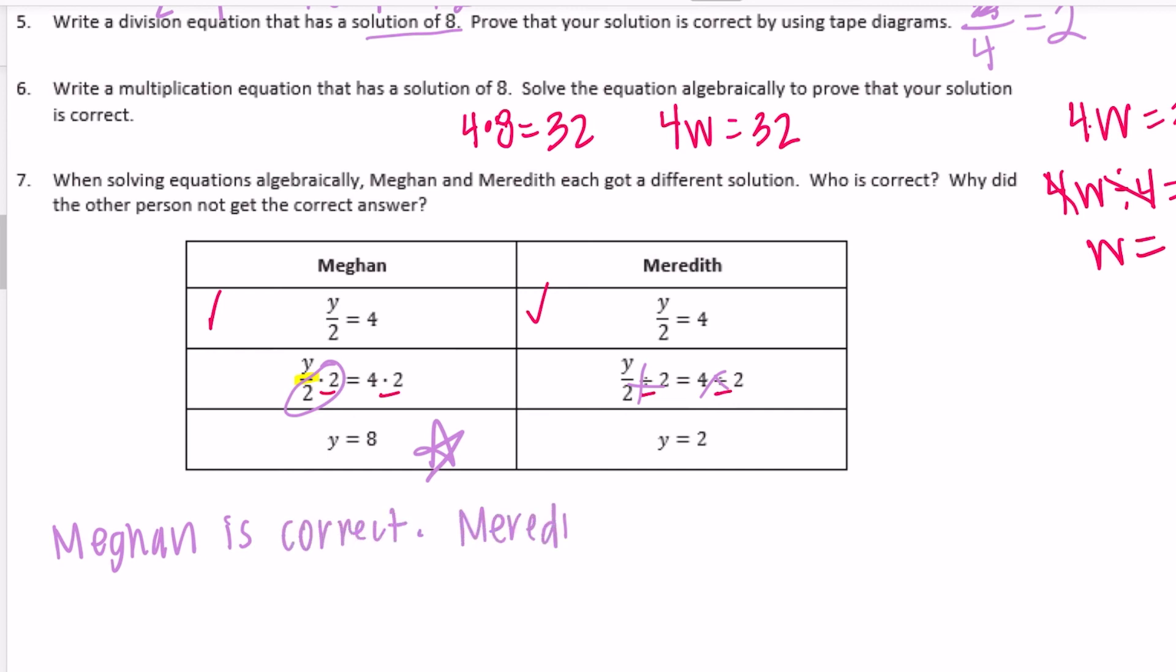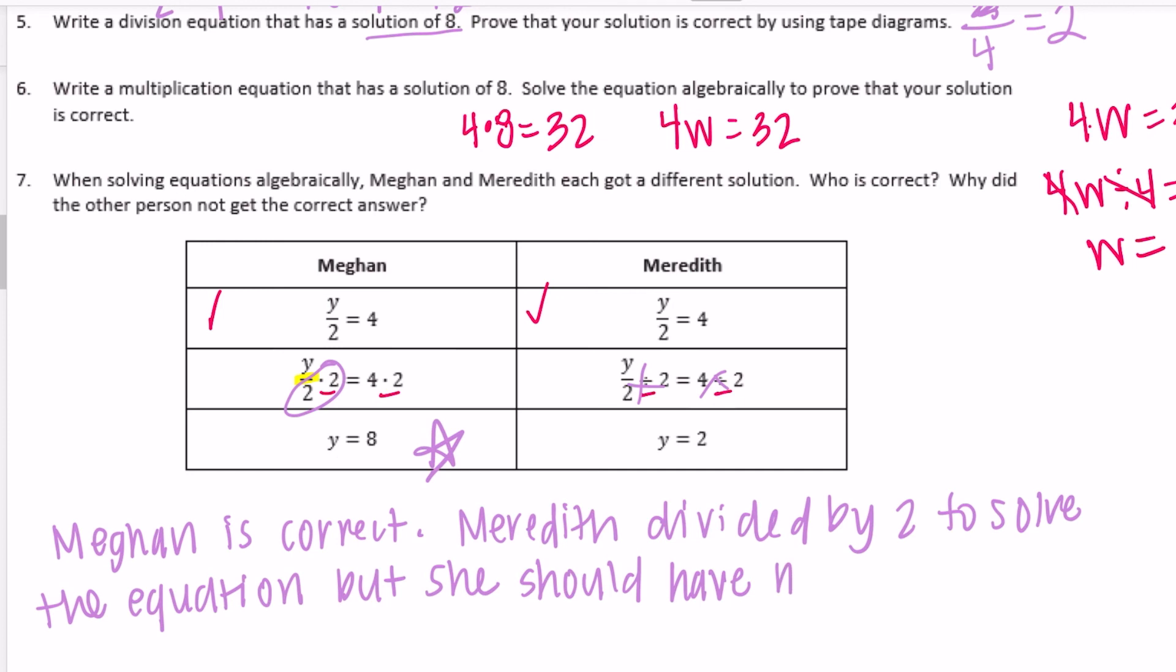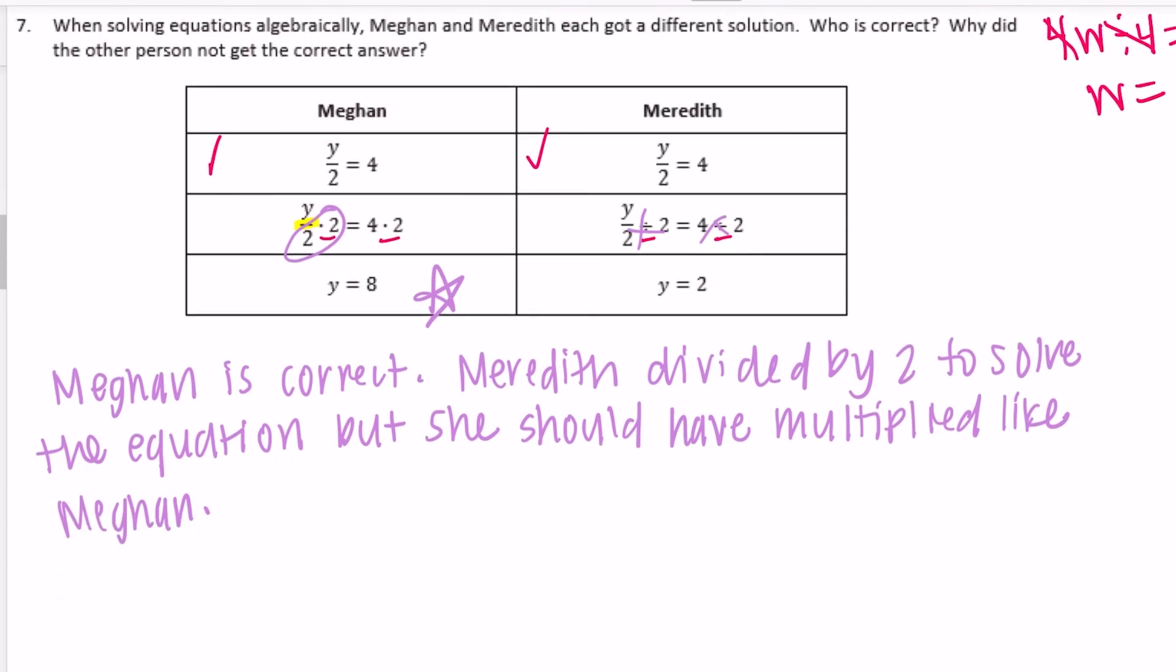Meredith divided by 2 to solve the equation but she should have multiplied like Megan. This is because of the identity property that states y divided by 2 times 2 is equal to y.